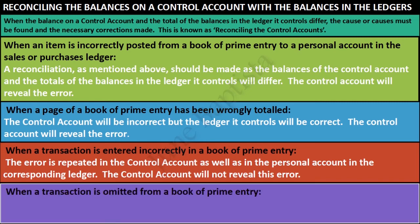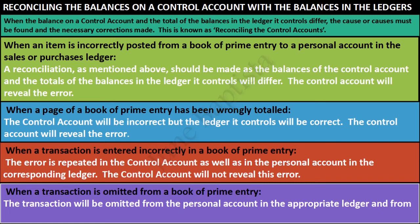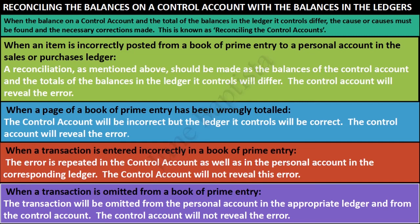Fourth, when a transaction is omitted from a book of prime entry, as the transaction is omitted it will also be omitted from the personal account in the appropriate ledger and from the control account. Therefore, the control account will not reveal the error as the balances in the control account and the ledger will be equal.